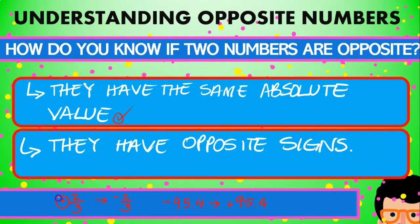And of course, they have opposite signs. So for plus 2 thirds, we have minus 2 thirds, and the contrary here, minus 95.4, the opposite being positive 95.4.